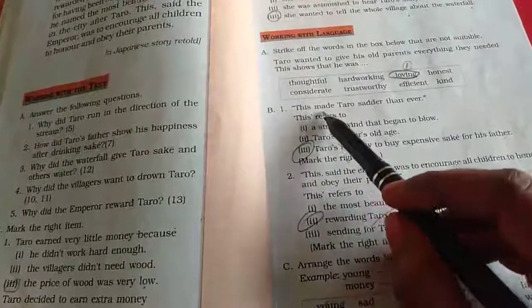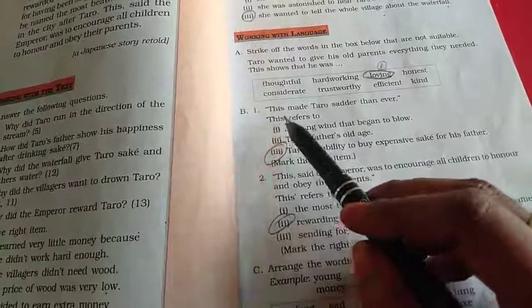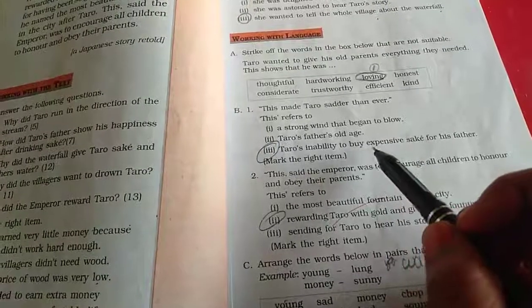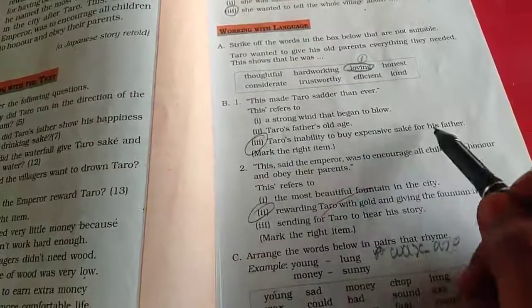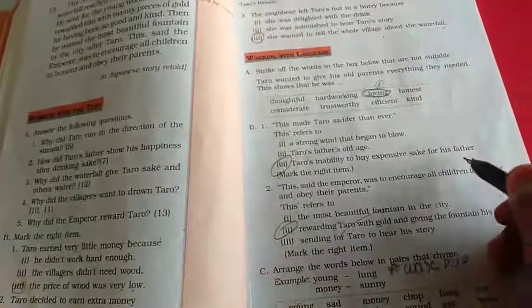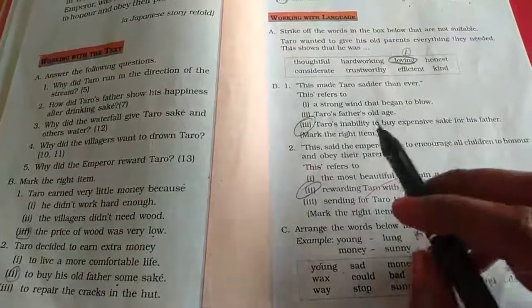Then B1. This made Tharu sad. This refers to Tharu's inability to buy the expensive shake for his father. So he want to buy, but at the same time he couldn't buy that thing.